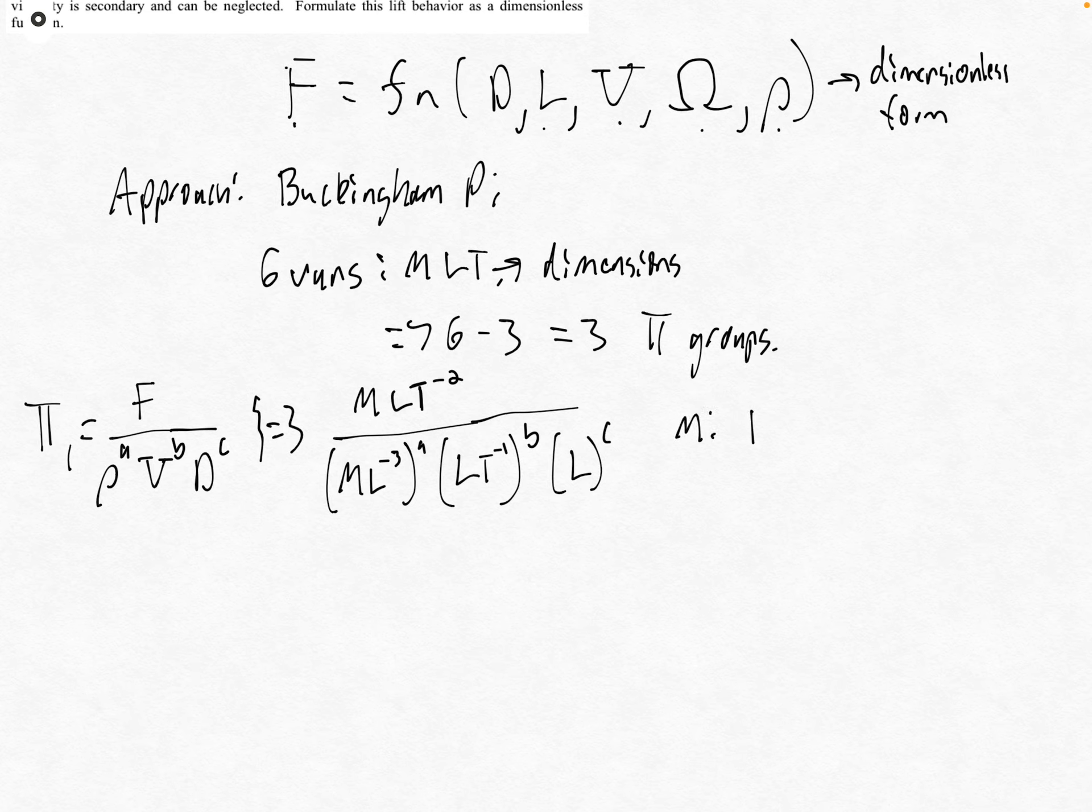For mass, we have one equals a. For length, we have one equals minus three a plus b plus c. For time, we have minus two equals minus b, which gives us b equals two.